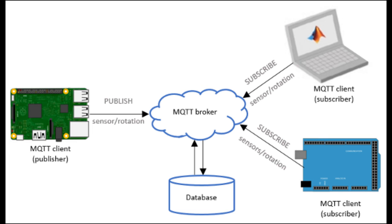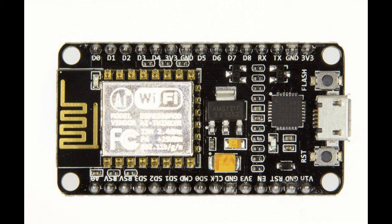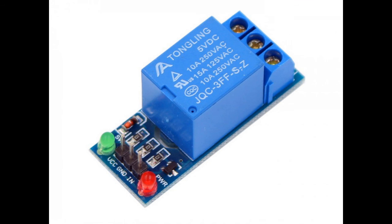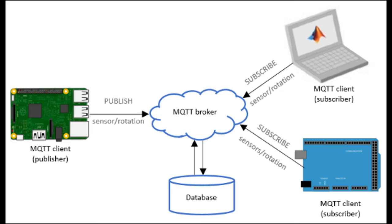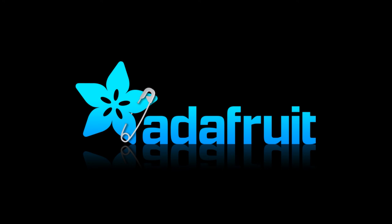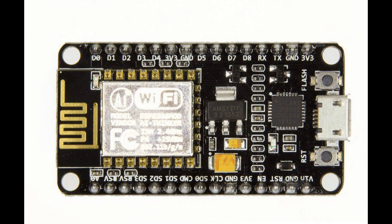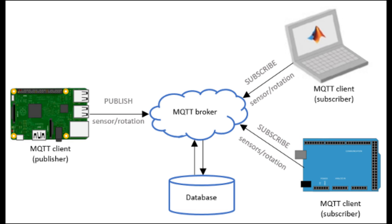What are the basic things needed? You need a NodeMCU as the controller, a relay module, and some wiring so you can connect it to the load like the AC. As you can see in the picture, the publisher is the Google Assistant and the subscriber is the NodeMCU. The Adafruit server stores the data, the NodeMCU subscribes to that data, and the MQTT broker is the protocol that works as an intermediary to communicate between the publisher and the subscriber.